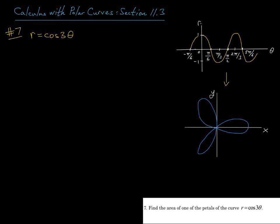So here I have the graph of r versus theta, and note that since this is cosine of 3 theta, the period of this wave is 2 pi over 3.